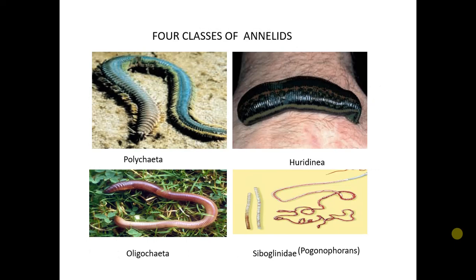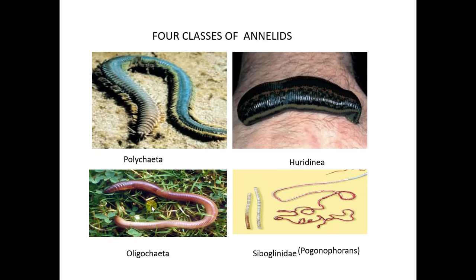There are four major classes of annelids: the polychaetes, the hirudinea, the oligochaetes, and the siblingmidae. Two of them are of particular importance. The first one is the polychaetes, which are marine in nature — you can find them in brackish water or in the ocean. While the oligochaetes are freshwater, that is why you cannot find earthworms inside the lagoon or inside the sea.